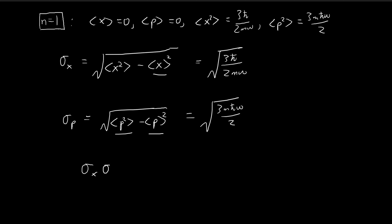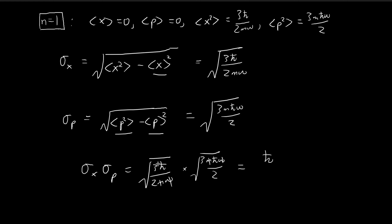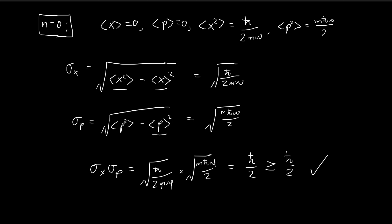Now we check the uncertainty principle by taking the product of σx and σp. You'll see it is slightly different from last time. Once you cross out the common terms, you have two h-bars giving h-bar, then 2 times square root of 3 and 2 times square root of 2 multiply together to give a 3 over 2 factor. So this time the product is larger than before, and of course it is always larger than or equal to h-bar over 2. The uncertainty principle is satisfied for the first stationary state, and we have finished part b.